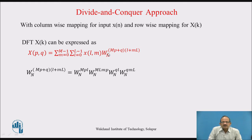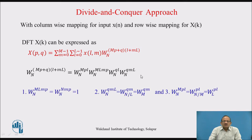Expanding W_N^((Mp + q)(l + Ml)), we get four terms: W_N^(Mpl), W_N^(Mlmp), W_N^(lq), and W_N^(qMl). Now, W_N^(Mlmp) — since M·L = N — becomes W_N^(Nmp), which equals e^(−j2π·mp) = 1, because e^(−j2π) raised to any integer is 1. Therefore this factor equals 1. Similarly, W_N^(qMl) can be written as W_M^(qm), and the first term W_N^(Mpl) becomes W_L^(pl).